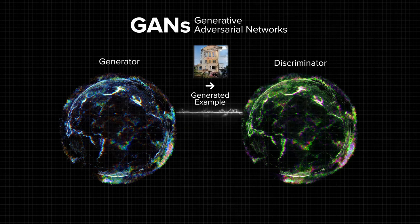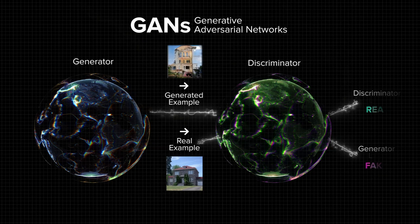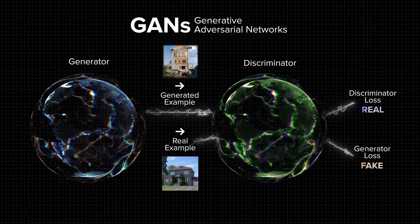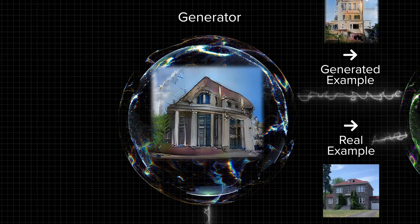At first, both of them are really bad at their job. A generator receives random noise as an input, so it will start by creating something random as well. A discriminator won't know synthetic from real data at first, but by not being able to guess correctly, it will update itself for a new iteration.